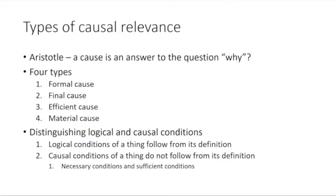Aristotle had a definition of cause that is very simple and broad and gets right to the point: a cause is an answer to the question 'why.' That's a good definition because it leaves open the range of different ways in which we can think of something as a cause. Aristotle laid out four different types of causes. Even if we're not Aristotelian, it's important to know these concepts because we use them — they are different answers to the question why. They are the formal cause, the final cause, the efficient cause, and the material cause.